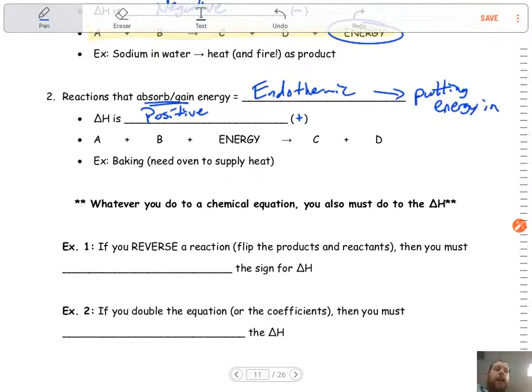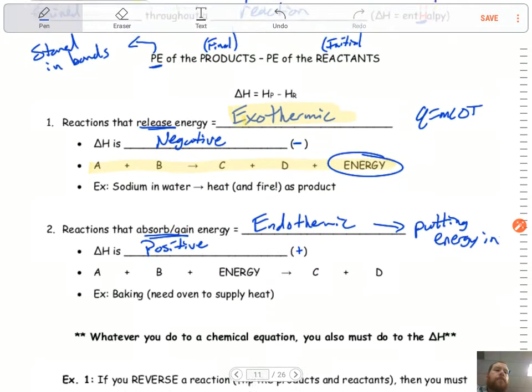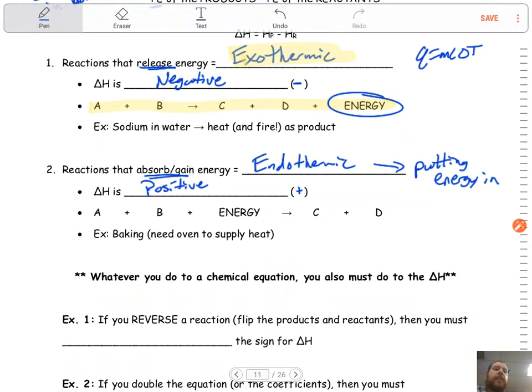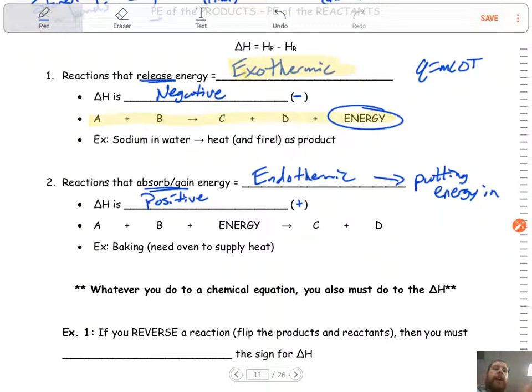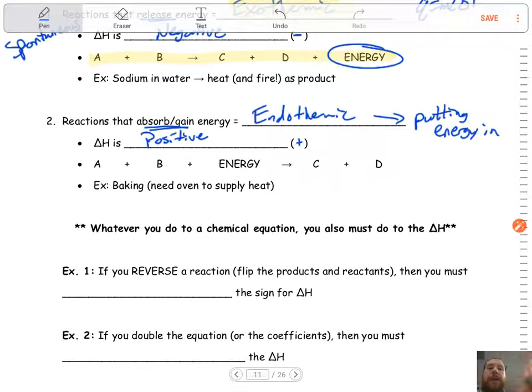So when we talk about reactions later on in terms of spontaneity, exothermic reactions are going to be spontaneous because you don't have to put any extra energy in. Endothermic reactions, on the other hand, are non-spontaneous.